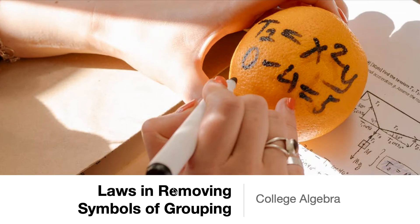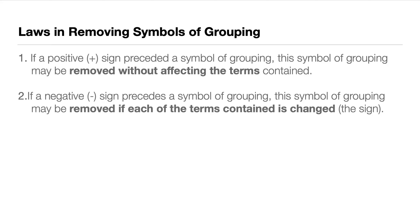Hi, so this is the second video after the terminologies and algebra. We will be starting with the algebra proper here in college algebra. In this video I'm going to present the laws of removing symbols of grouping. We have two simple laws. This is similar to the video before about the order of operations in PEMDAS and GEMDAS, but now there are variables involved — the x's and y's and so on.